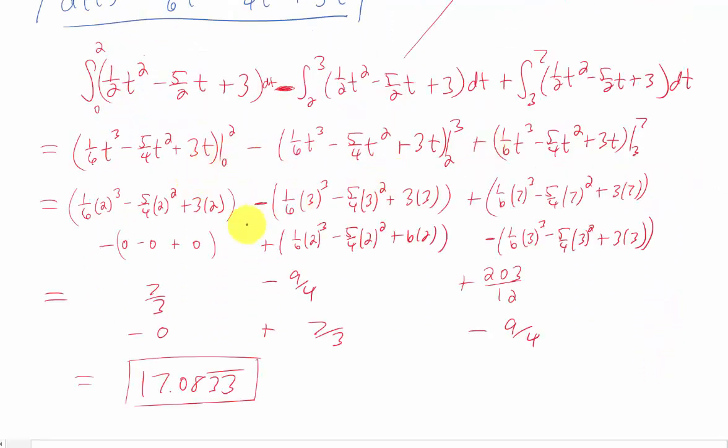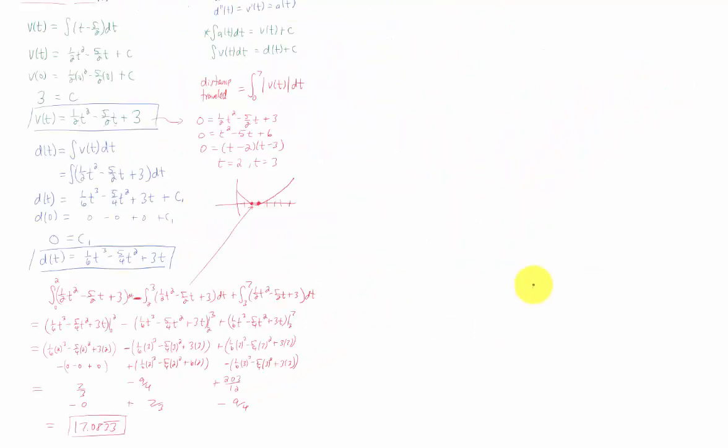Okay, simplifying all of those numbers was a pretty tedious process. But there's all my work right there. I got a final answer that the total distance traveled by the particle was about 17.0833 repeating units. So you can stare at this work for a little bit. I'm just going to zoom out. And it looks like that's about as far as it wants to zoom out. So there you go.